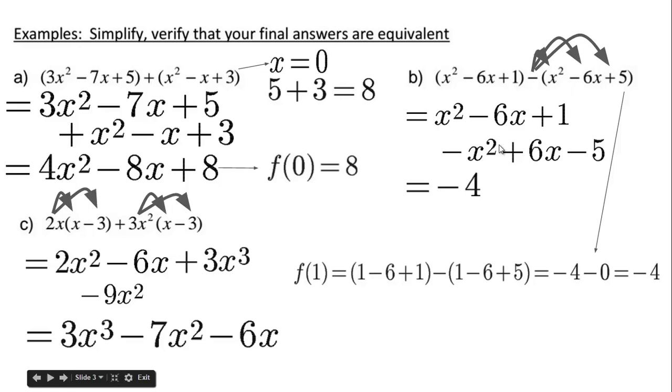For B, if we sub in 1, we get 1 - 6 + 1. 1 is a really easy number because we can just add the coefficients. And then -1 - 6 + 5. That gives you -4 - 0, which is -4. And that's what the final answer is as well.